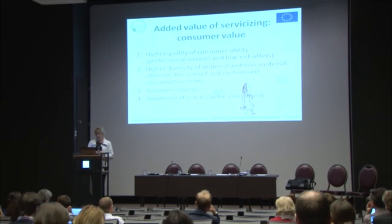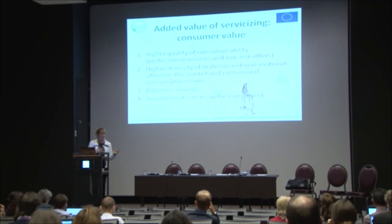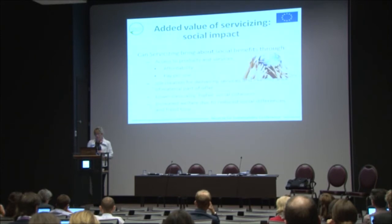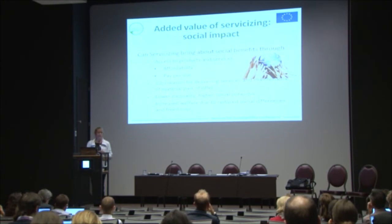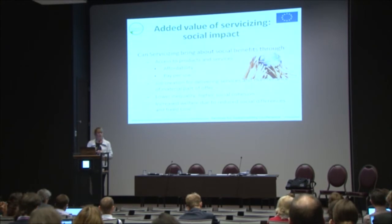From the consumer point of view, what do we get? Higher quality professional services, low risks — for example with chemical management that is paramount to reduce risks. Also high diversity of material and non-material offers. Before we were innovating only on the product side, which was quite restricted; now we have the whole diversity of services offered. We also get economic savings by not needing to invest upfront but spreading costs throughout the use of the product. In terms of social impact, for many people during these strenuous times of financial crisis, access to products and services is important — reducing differences between people in society by offering access to products and not necessarily forcing them to buy them. It is about affordability, enabled through pay-per-use business models.